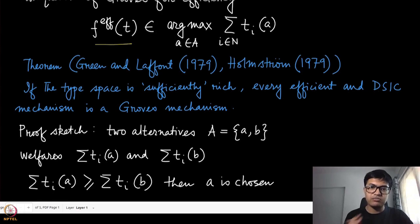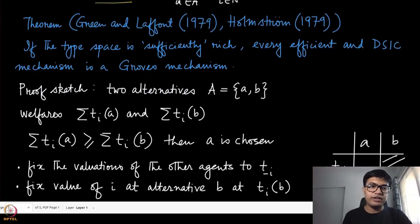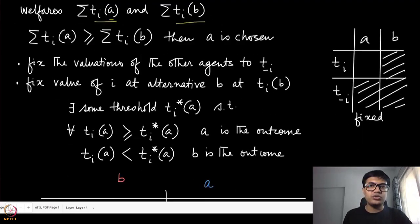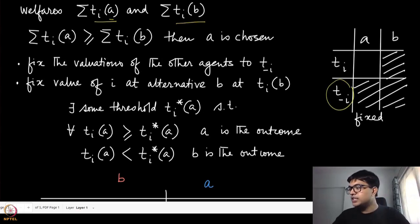We are going to give the proof sketch only for two alternatives. For more than two alternatives, this proof can be extended, and that is exactly what Holmstrom's result does. This presentation is essentially from Holmstrom's paper itself. We are looking at the welfare under these two alternatives: the sum of valuations of all players at alternative a and at alternative b. Efficiency means that whenever the sum over t_i(a) is at least as large as t_i(b), then a will be chosen, breaking ties in favor of a.